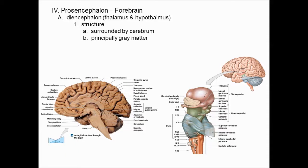Now we move past the midbrain up to the diencephalon, which is part of the forebrain — right above the midbrain in this area. Di means two, and cephalon refers to a cephalic structure, referring to its two principal parts: the thalamus and hypothalamus. It's right in the middle of the cerebrum.